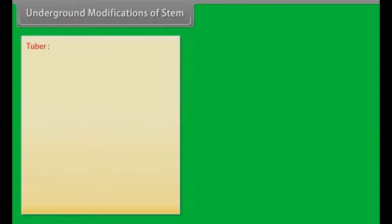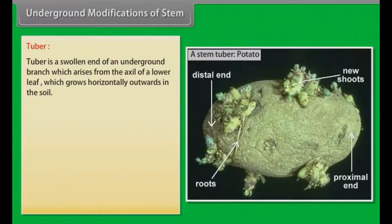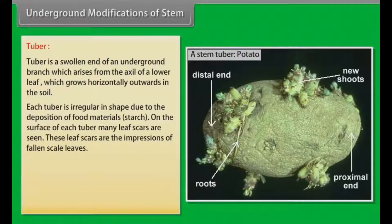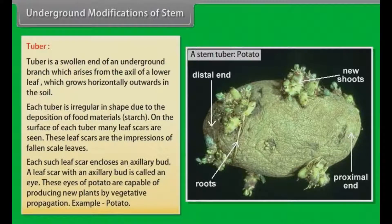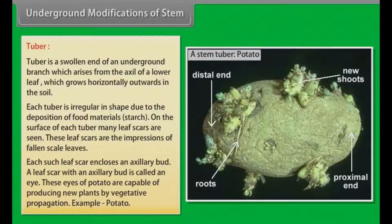A tuber is a swollen end of an underground branch which arises from the axil of a lower leaf and grows horizontally outwards in the soil. Each tuber is irregular in shape due to the deposition of food materials such as starch. On the surface of each tuber, many leaf scars are seen — these are the impressions of fallen scale leaves. Each such leaf scar encloses an axillary bud. A leaf scar with an axillary bud is called an eye. These eyes of potato are capable of producing new plants by vegetative propagation. Example: potato.